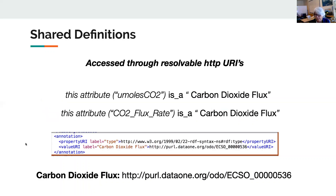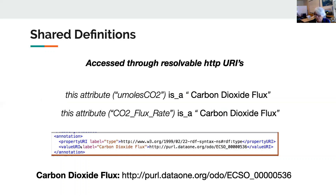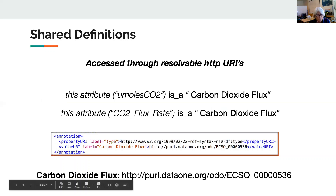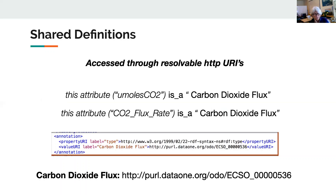Here's one more example of an annotation. You can have the same annotation applied to two different attributes — one that uses the term 'micromoles carbon CO2' or CO2 flux rate. If the curators have tagged these attributes with the URI for carbon dioxide flux, then it would be clear that they refer to the same type of measurements, whereas with a string, you would never really be sure.